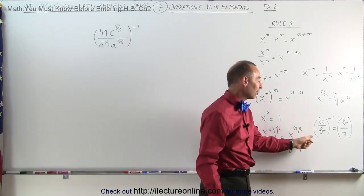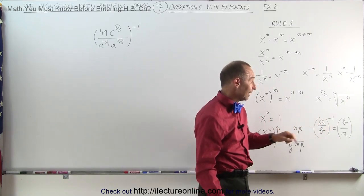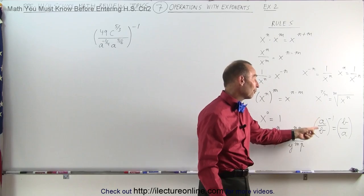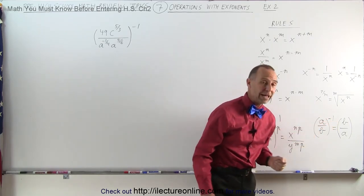If you have a fraction that's raised to a negative exponent, like negative 1, that is the same as simply taking the inverse of that fraction. So a over b raised to the negative 1 power is the same as b over a.